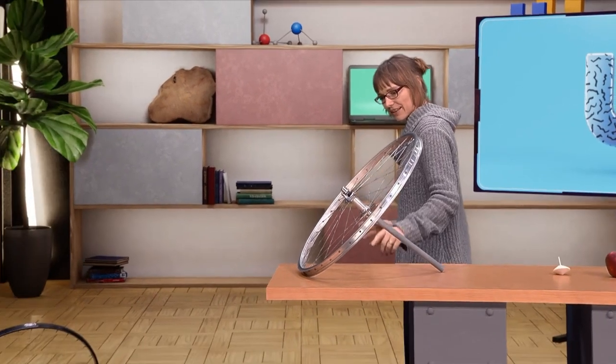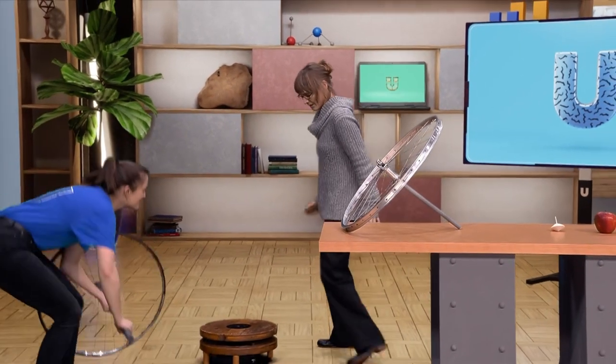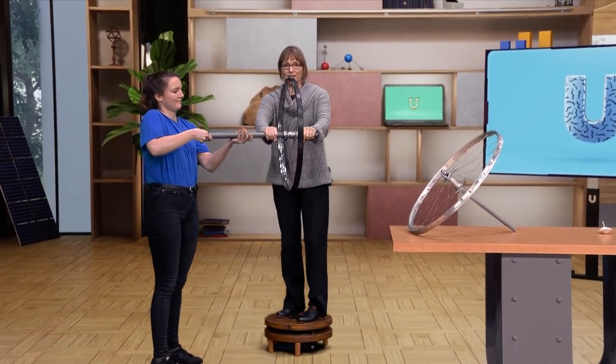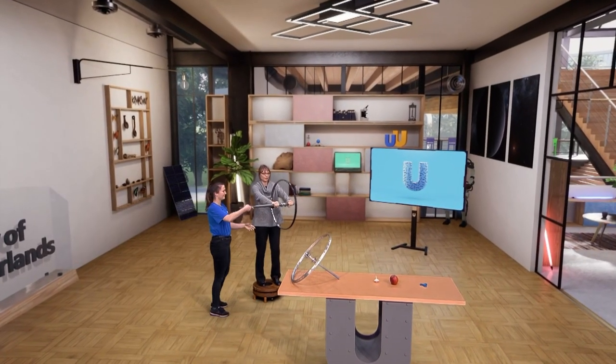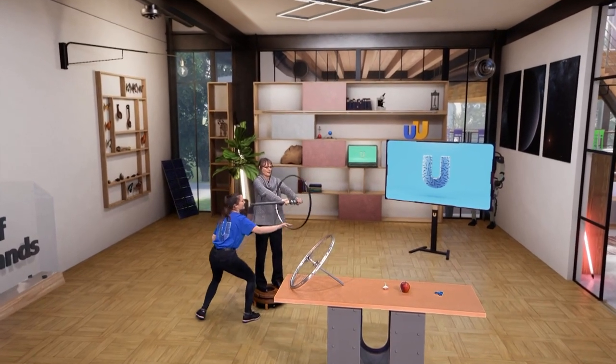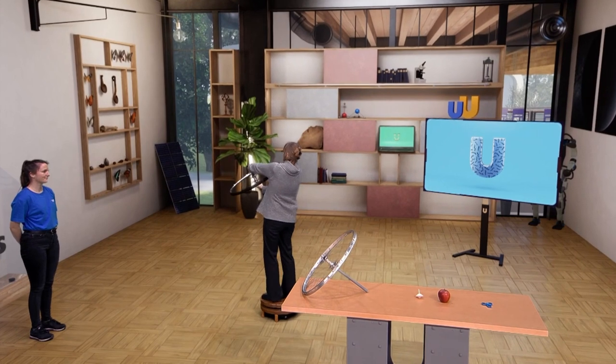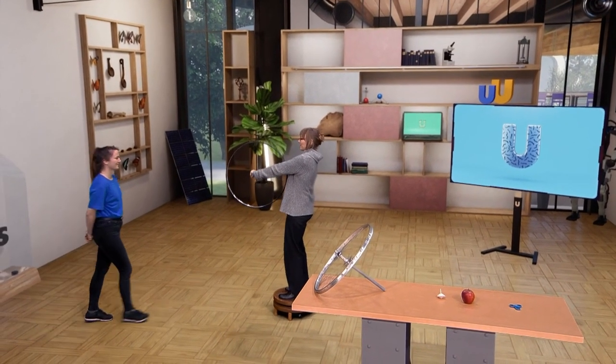I will try to stand on this platform, which can rotate about the vertical axis, while holding this heavy wheel, which Sophie spins really fast. Now, if I tilt this wheel about another axis, in this case a horizontal forward pointing axis, thank you very much Sophie.